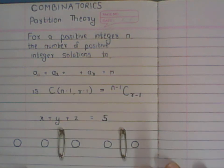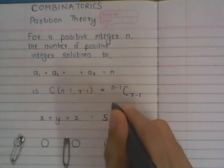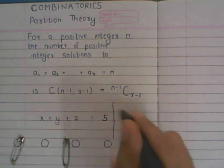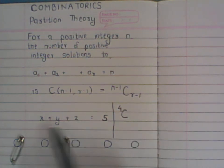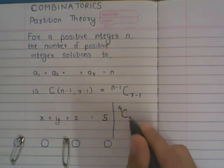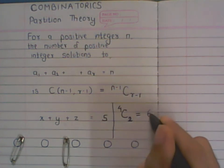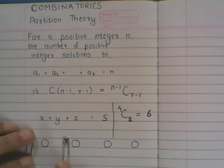Applying the formula: n is five, so n minus one is four; r is three (three variables), so r minus one is two. We get C(4,2), which equals six. So there are exactly six ways to distribute five balls among three children such that each child gets at least one ball. Let me demonstrate all six using the partitions.